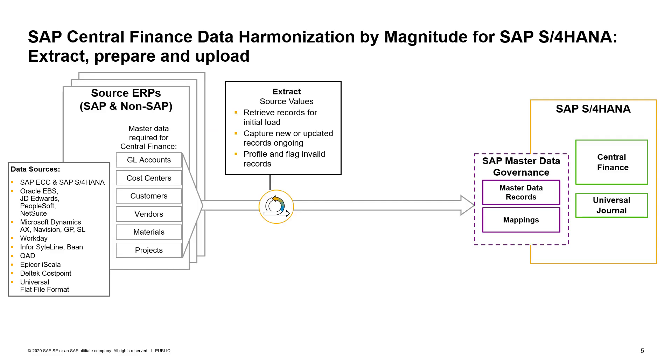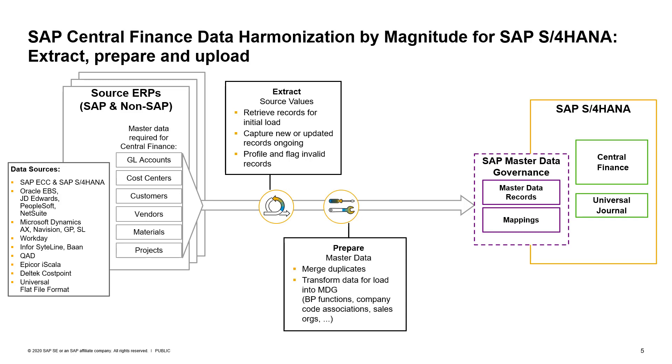Once the records are retrieved, Magnitude prepares them for loading. Using machine learning, Magnitude will harmonize similar records into a single golden record.